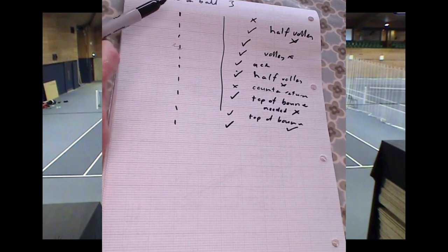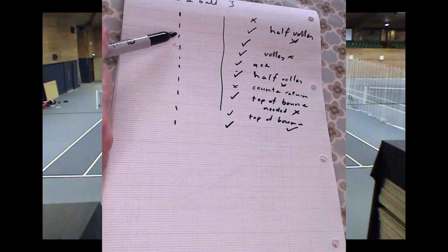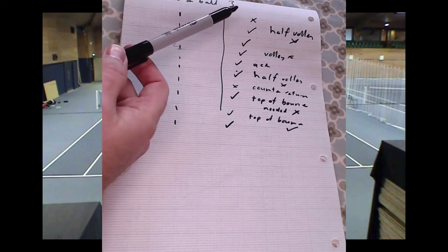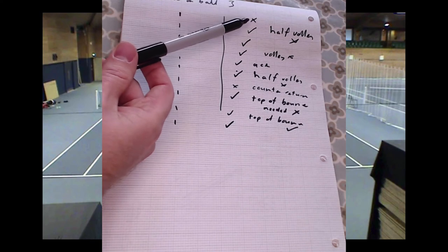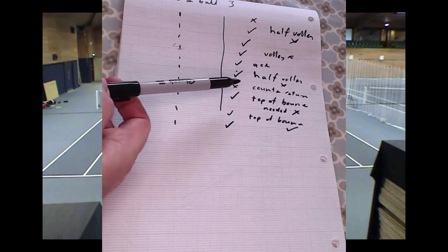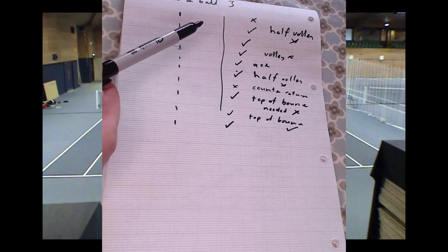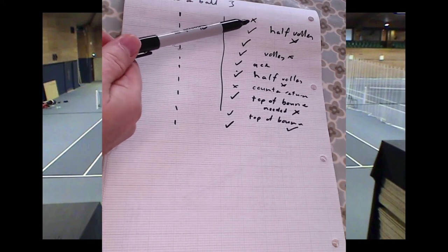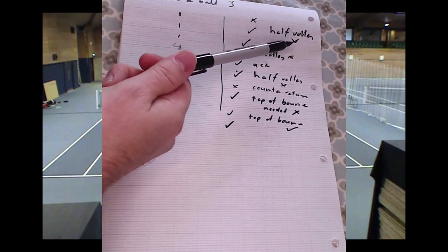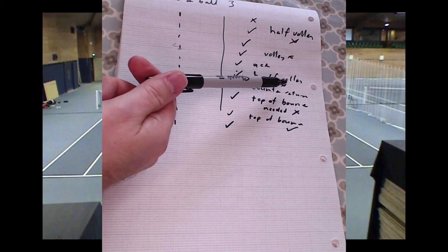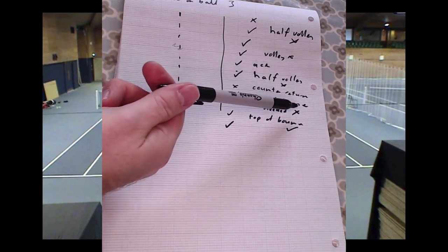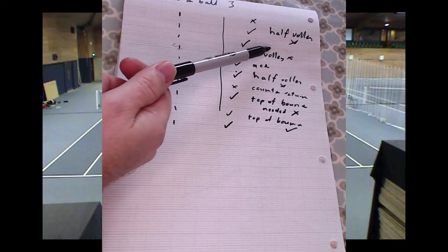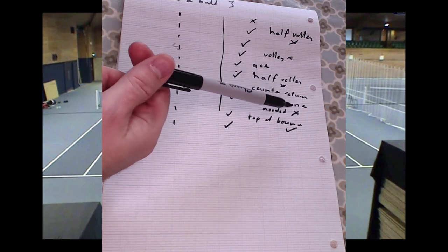I've taken 10 points to make the math quite easy. We have 10 serves, and out of those 10 serves he was in an offense or attack position 8 out of 10 — so 80% he was in attack. Out of those 80%, looking at the 8, he didn't win 5 of those points. Then we look at the simple notes: half volley, volley, half volley, top of the bounce. So you could choose something around movement up at the net, but if I was being more general I would simply choose movement after the serve.